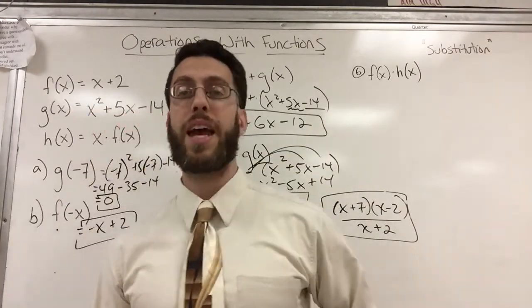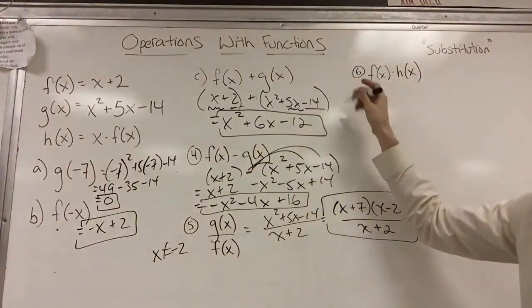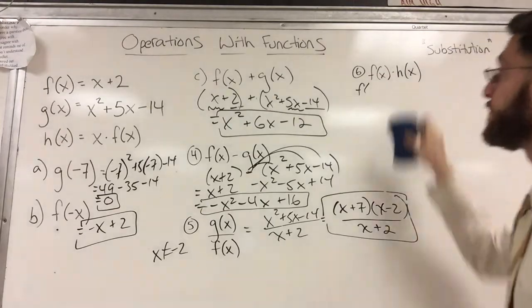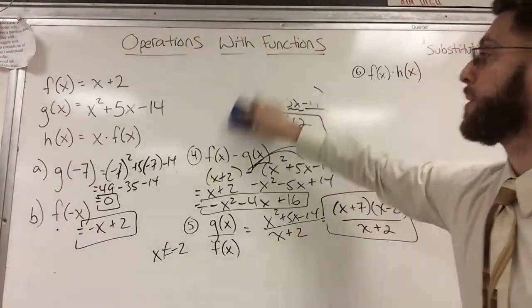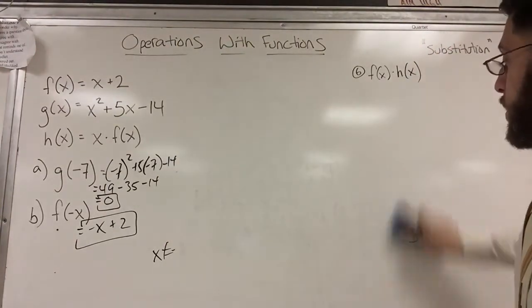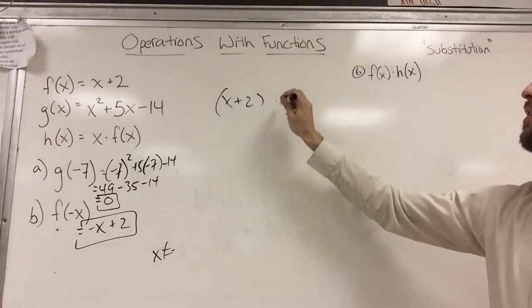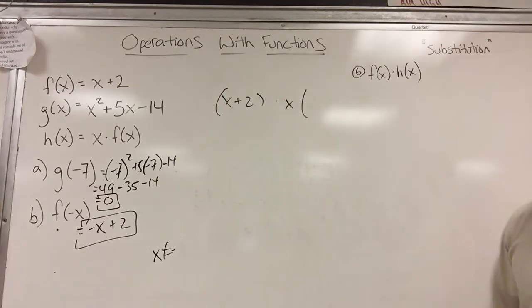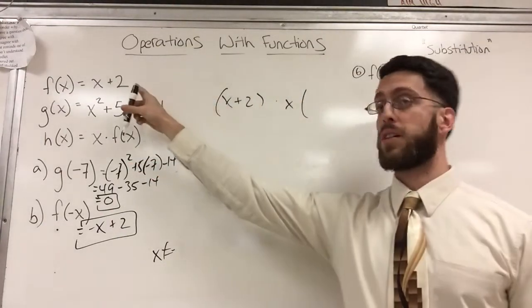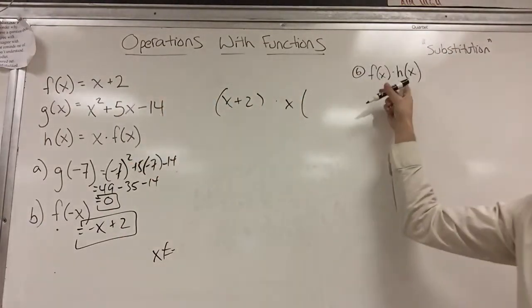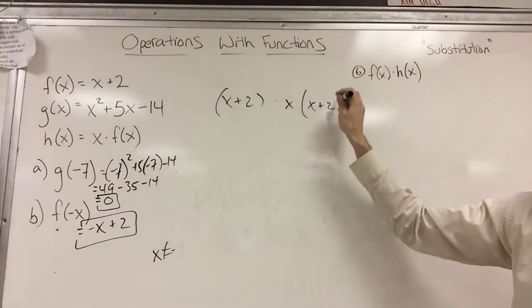And finally, f of x times h. What is h of x? H of x is x times f of x. So I got to really do f of x. Oh, I don't have to write that again. I'm going to do, want some space? Let's get some space. Let's see. What's f of x? x plus two times x times, what's h of x? This is a lot here. So my f of x is there, x plus two. My h of x, h of x is really x times f of x. So that's x times x plus two.